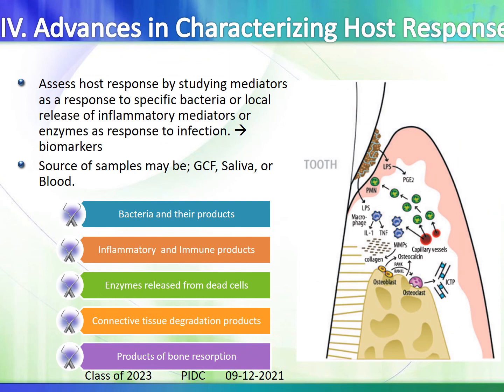Advances in characterizing the host response assess host response by studying mediators as a response to specific bacteria, local release of inflammatory mediators or enzymes as a response to infection — known as biomarkers. Samples can be taken from GCF, saliva, or blood. If bacterial or inflammatory/immune products, enzymes from dead cells, connective tissue degradation products, or products of bone resorption are detected, this indicates an ongoing disease process in the gums.